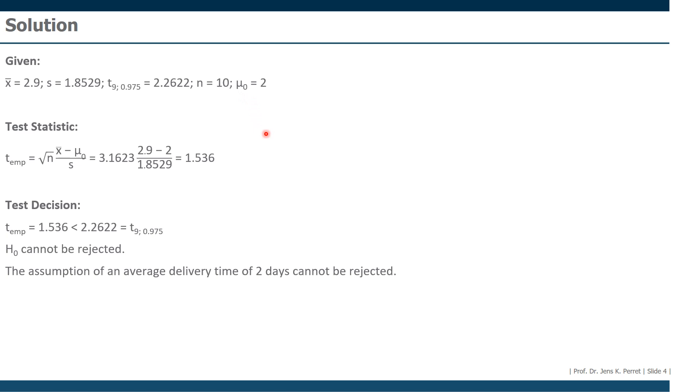This means for our exercise or the practical situation behind this, we cannot reject the assumption that the average delivery time is two days. It could be larger or smaller, but those are just random fluctuations. We have to assume this is more or less two days.